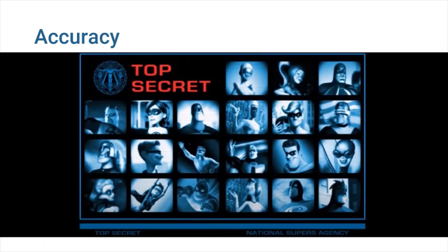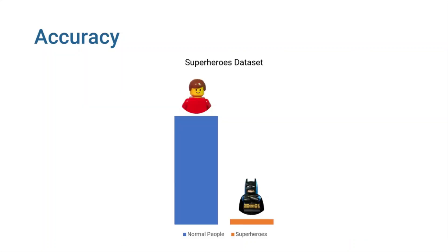The government has now requested you to create a classifier that can accurately identify superheroes so that security agencies can monitor their actions. Superheroes are quite uncommon. There are only a few hundreds of them in the world, and they all live in New York City. So your training dataset will look like this.